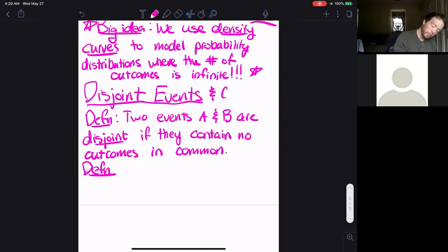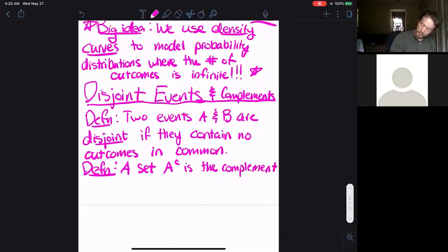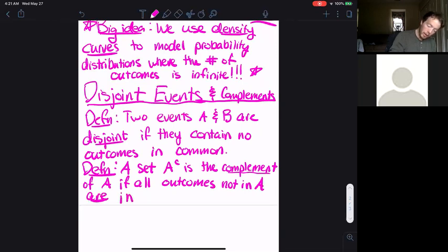Second definition. A set A complement, which we write as A to the power of C, is the complement of A if all outcomes not in A are in A complement.